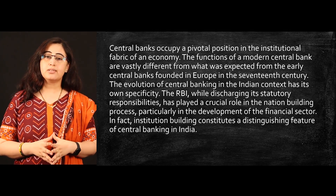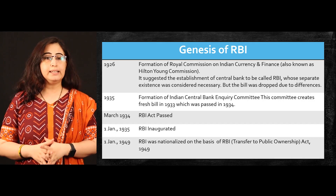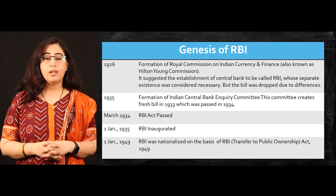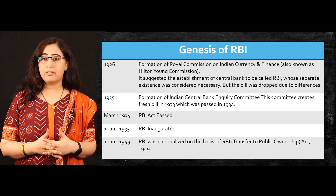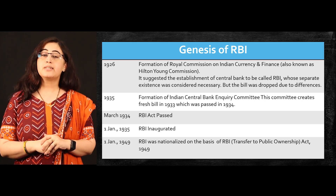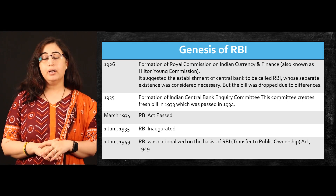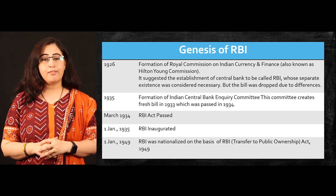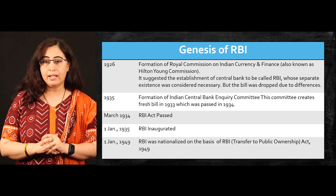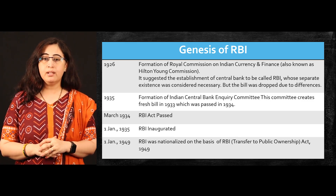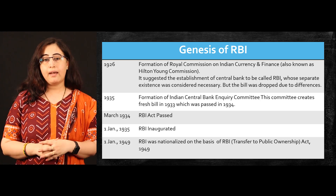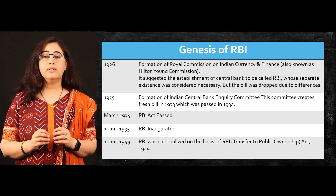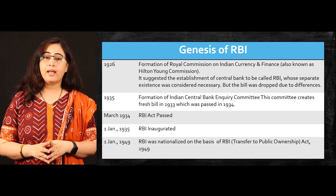Have a look at the genesis of RBI. In 1926, the formation of the Royal Commission on Indian Currency and Finance, which is also known as the Hilton Young Commission, suggested the establishment of a central bank to be called RBI, whose separate existence was considered necessary. But this bill was dropped due to political differences. In 1935, the Indian Bank Inquiry Committee was formed. This committee created a fresh bill which was passed in 1934, and in 1934 the RBI Act was passed. At that time, the main work of the central bank was as a note issuing authority.